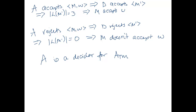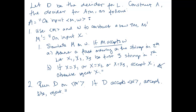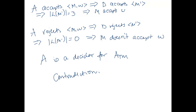We've constructed a decider for ATM, but we know ATM is undecidable — so we have a contradiction. The contradiction arose from our assumption that a decider D exists for L. We never said what this specific decider is; we only assumed it exists. Since that assumption leads to a contradiction, a decider for L cannot possibly exist. Thus, L is undecidable.